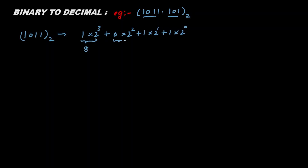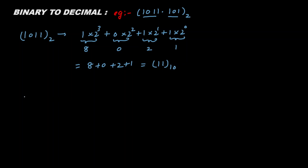When we solve this, we get eight, zero, two, and one. Adding these: eight plus zero plus two plus one equals eleven. So the integer part in base ten is eleven.